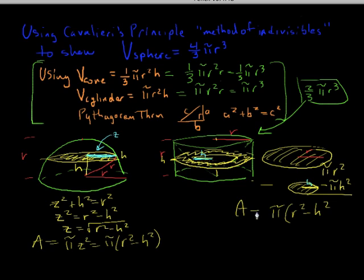So if each of these cross sections have the same area, then when we sum up all of these areas, it must be true that the volume inside, the volume of this coneless cylinder must be equal to the volume of this hemisphere.